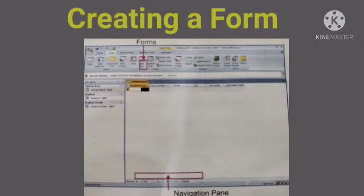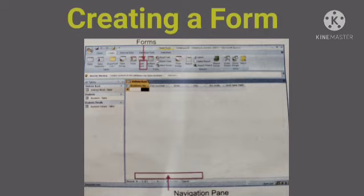How to create a form. First, in the database window, open the database on which the form has to be created. Second, click on the Create tab and click the Form button from the Forms group — the form screen appears. Third, on the status bar below, click on the navigation button to view the records serially.